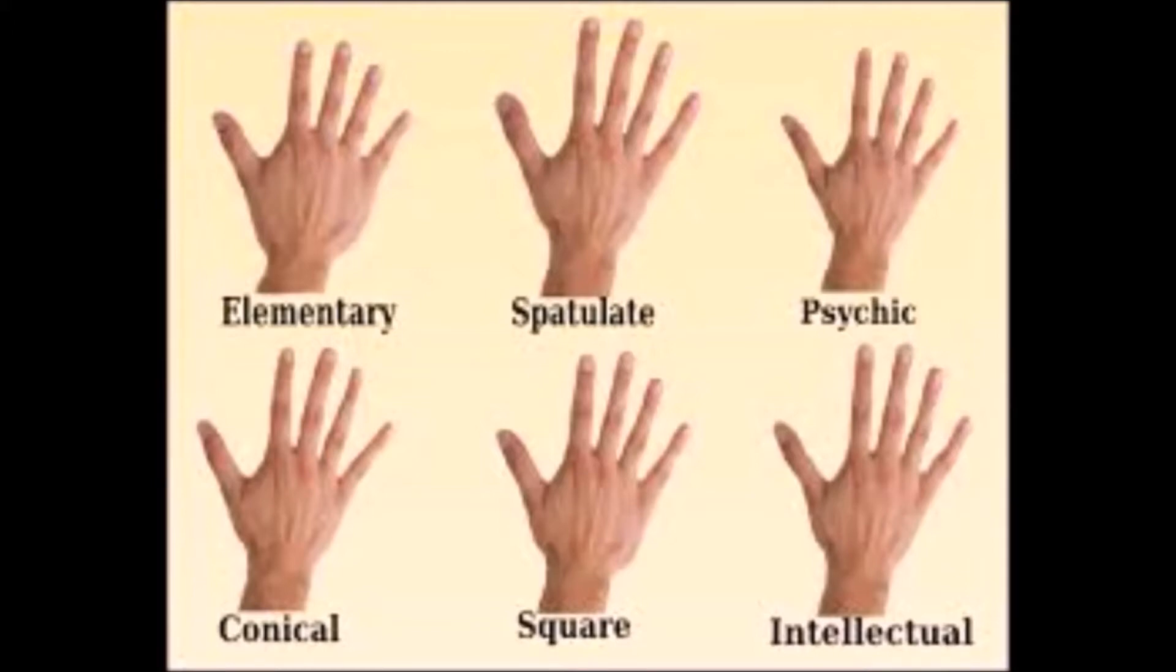The square hand. This square hand is the practical working hand. It is really rectangular overall, but the palm is square and the fingers have a squared off appearance at the fingertips.